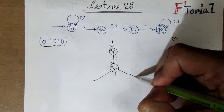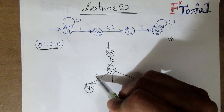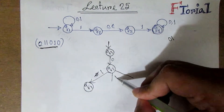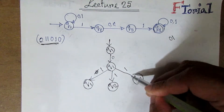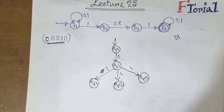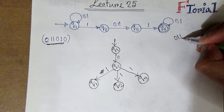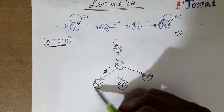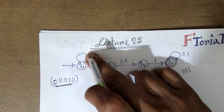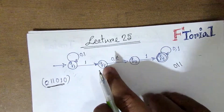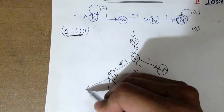We can take it in the transition — on input 1, from q1 we go to q1, q2, q3. So here, on the next input 1, we can take it in three different ways.